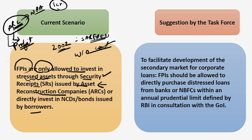In the current scenario, only FPIs are allowed to invest in stressed assets through security receipts. But the task force headed by TN Manoharan suggested developing a secondary market for corporate loans. That is, FPIs should be allowed to directly purchase distressed loans from banks or NBFCs within an annual prudential limit defined by RBI in consultation with the Government of India. The implication will be an active secondary market for corporate loans, which will make bank balance sheets cleaner at a faster pace and allow NBFCs to get rid of the liquidity crunch. For more details on the suggestions, you can refer to the September current affairs document available on the website.